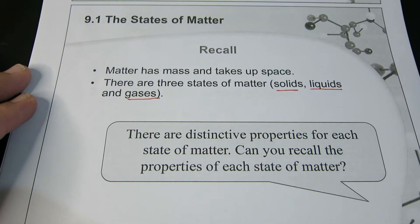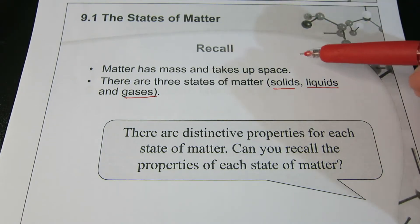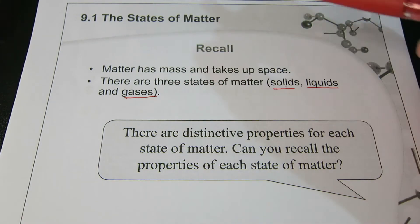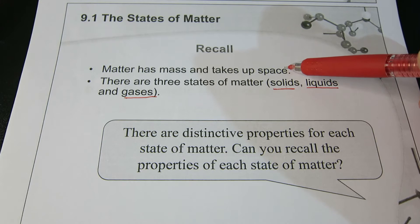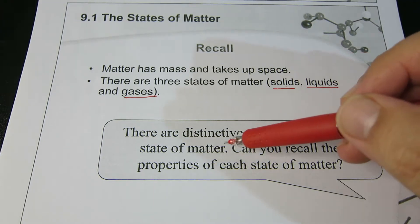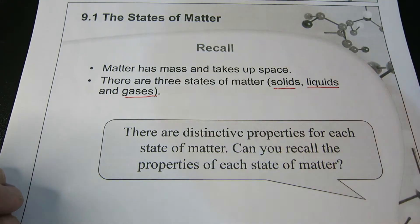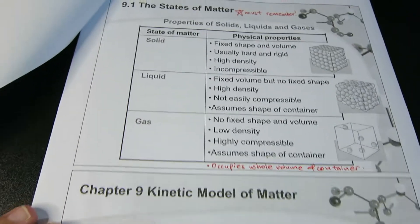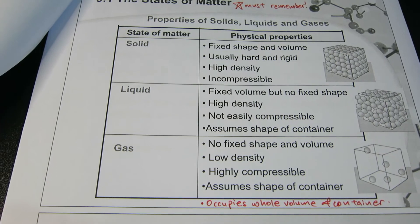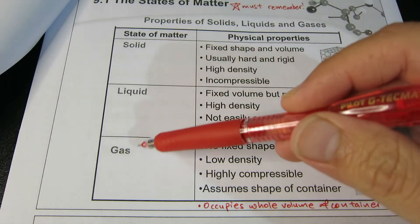So the states of matter — first things first, you need to remember that there are three states of matter: solid, liquids, and gases. Matter has mass and it takes up space. Over the next few slides, you're going to cover all the properties of each of these states of matter and why they are such because of the kinetic model of matter. These are things that you must memorize.